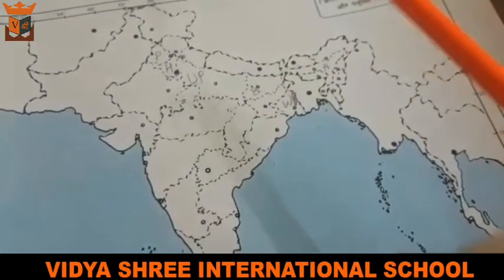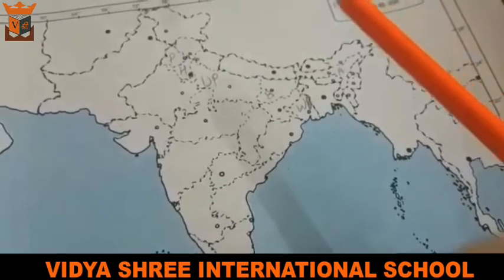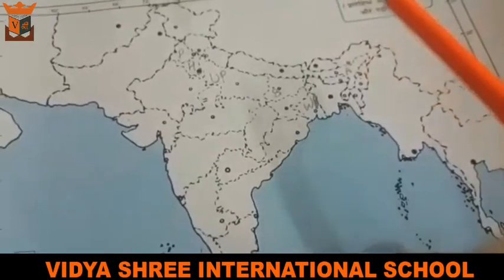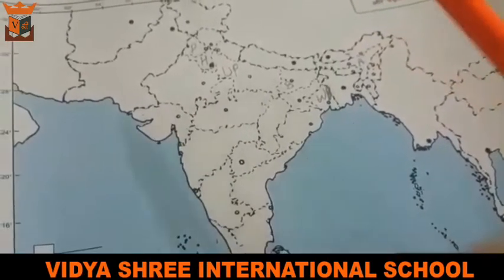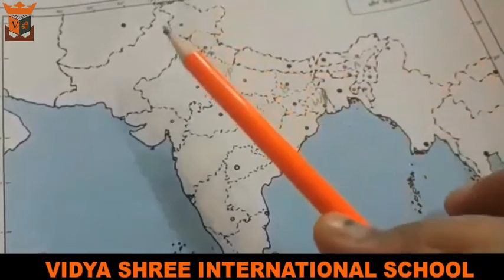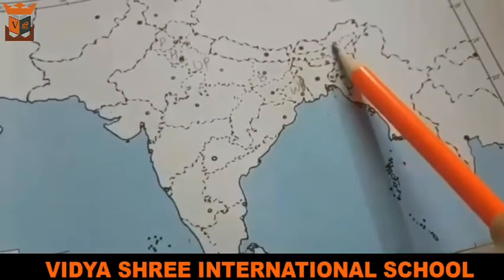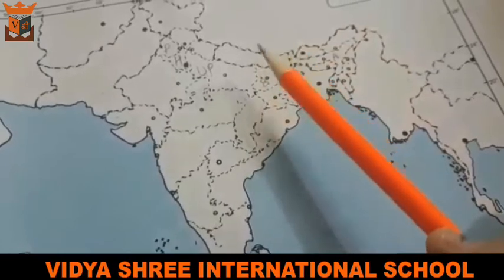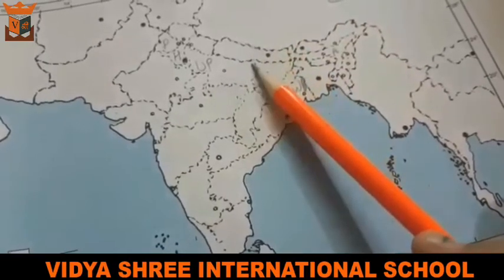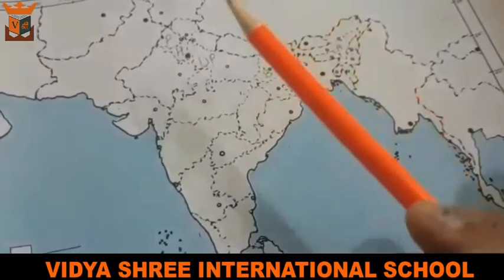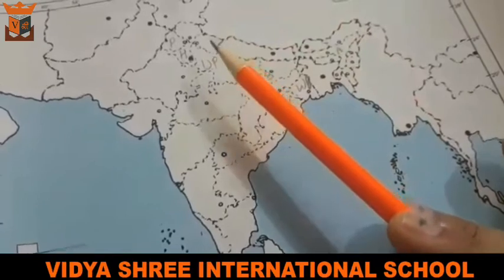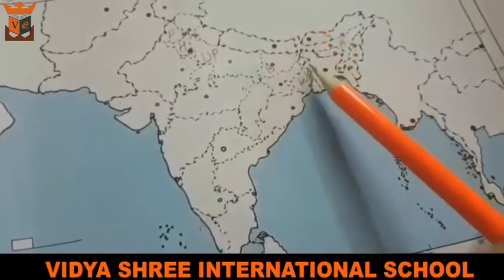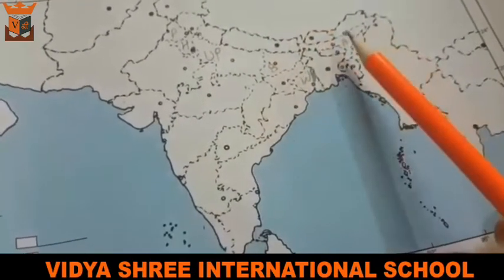So we can say the Northern Plains are vast, flat, fertile plains that cover most of the northern to eastern area of India. They stretch across the states of Punjab, Haryana, Delhi, Uttar Pradesh, Bihar, West Bengal, and Assam.